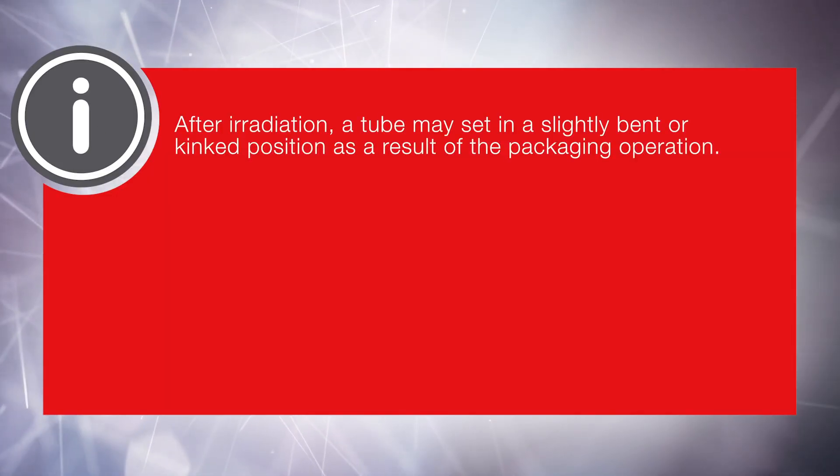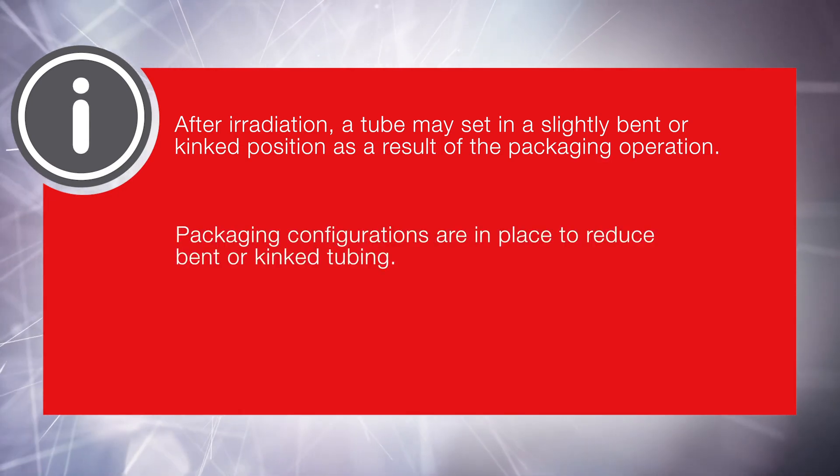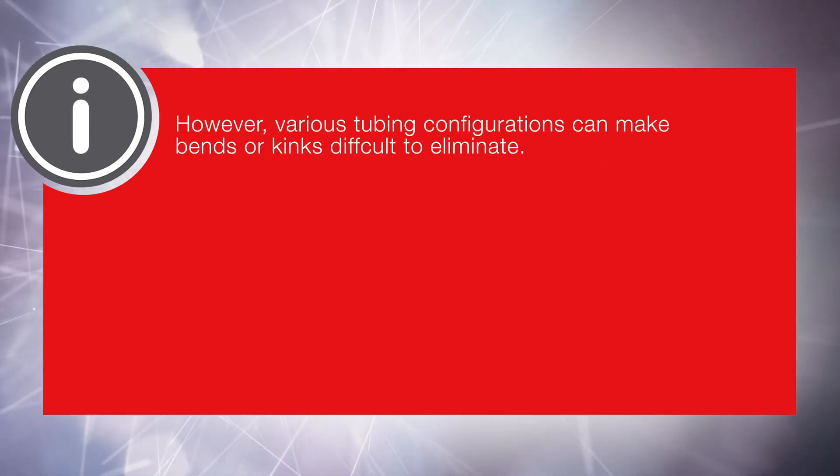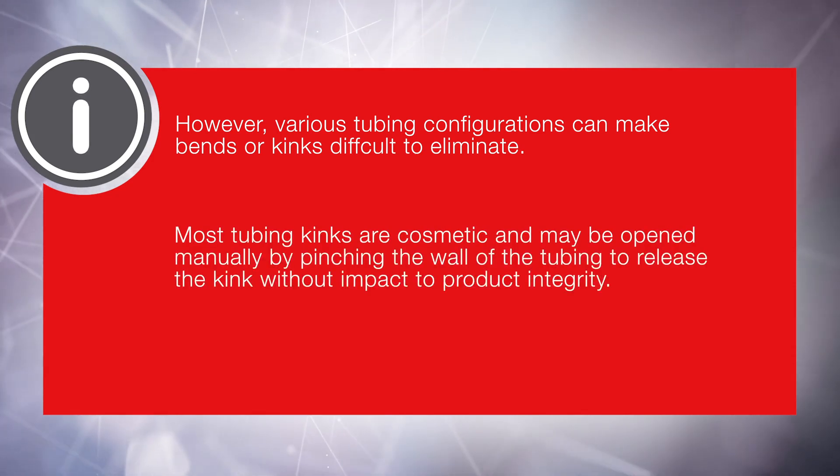After irradiation, a tube may set in a slightly bent or kinked position as a result of a packaging operation. Packaging configurations are in place to reduce bent or kinked tubing. However, various tubing configurations can make bends or kinks difficult to eliminate. Most tubing kinks are cosmetic and may be opened manually by pinching the wall of the tubing to release the kink without impact to product integrity.